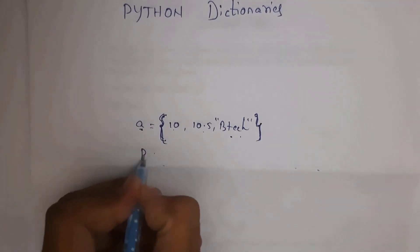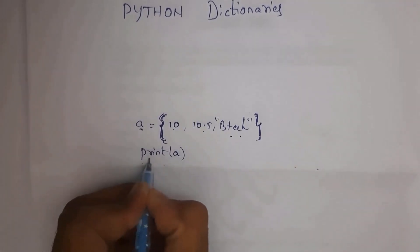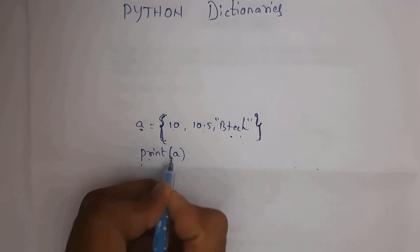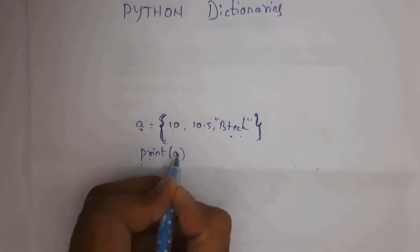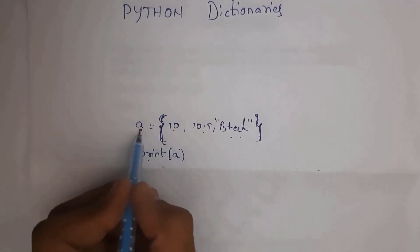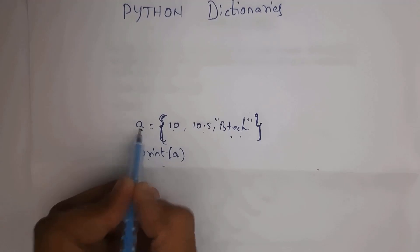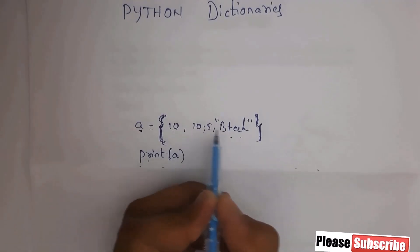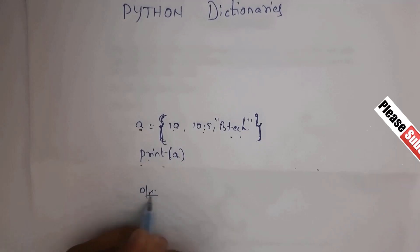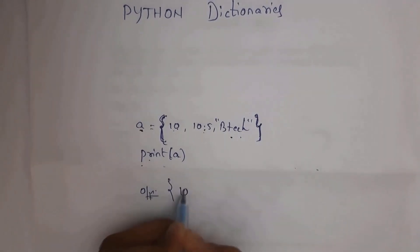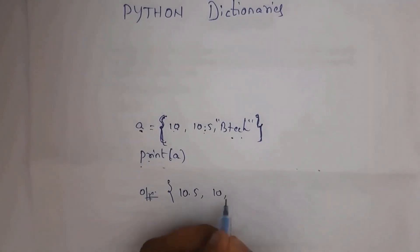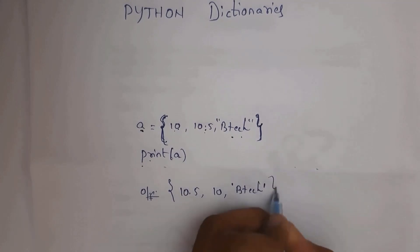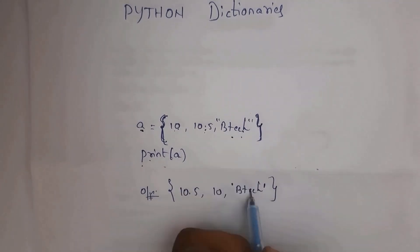Whenever you write print(a), the print function generates output. So whatever data is present inside variable a will be output. Since a contains 10, 10.5, btec, I will get output 10.5, 10, btec. Note that though you write btec in double quotations, in the output it will display btec in single quotations.